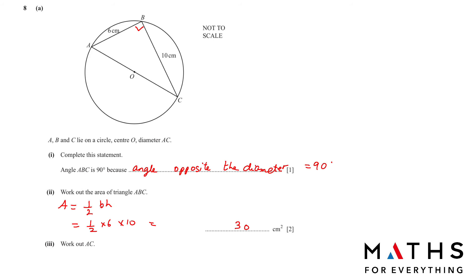Next, we have to find out AC. AC is the hypotenuse. To find the hypotenuse, we use the Pythagoras theorem. A square plus B square is equal to C square. Here, C is our hypotenuse. To find C, we will square root the opposite and the adjacent that we have here. 6 square plus 10 square equals square root of 136, and we will get 11.66 rounded to 1 decimal place. 11.6 is your answer.